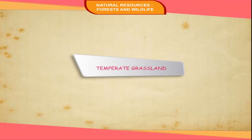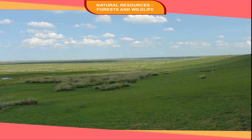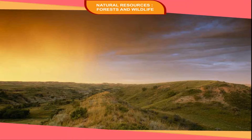Temperate Grasslands are found in the interiors of continents, which have an extreme type of climate with a moderate amount of rainfall. These grasslands are the prairies of North America, the steppes of Europe, the pampas of South America, the downs of Australia, and the veld of South Africa.